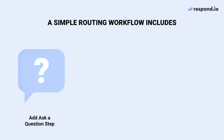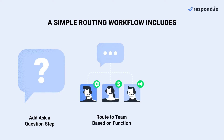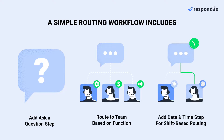Let me first show you an example of a simple routing method. It includes creating an ask a question step to understand the conversation purpose so we can route the conversation to the right team based on functions. Then adding the date and time step into the workflow for teams with multiple shifts. When a contact starts a conversation, we want to ask a question, save the answers, and use them as conditions in a branch.